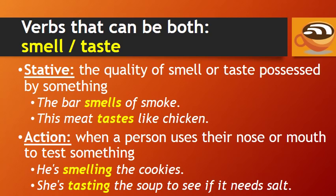Smell and taste are stative verbs when describing the quality of smell or taste possessed by something — for example, 'the bar smells of smoke,' or 'this meat tastes like chicken.' Smell and taste are action verbs when a person uses their nose or mouth to test something — for example, 'he's smelling the cookies,' 'she's tasting the soup to see if it needs salt.'